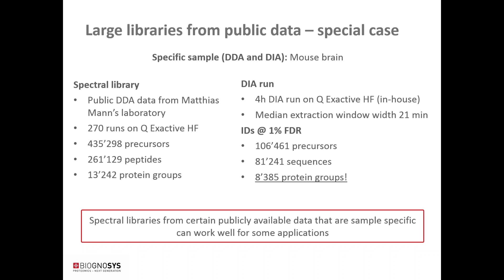With a spectral library from the usual workflow, we identified a little over 7,000 proteins. However, there are requirements: the experiment must use the same or very similar tissue, the LC-MS-MS setup must be almost exactly the same in terms of chromatography and instrument gradient, you need high-quality DDA data, and you need significant computational resources. That pushes you from 7,000 to about 8,000 IDs, so the question is whether that time investment is proportional to the results.